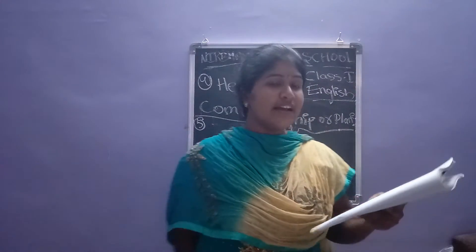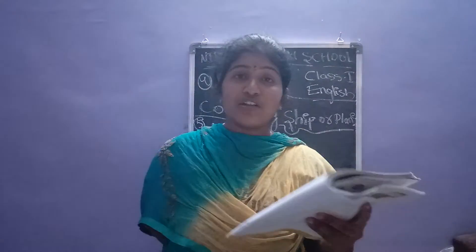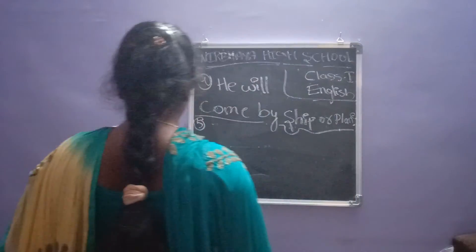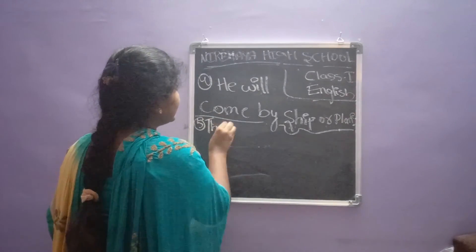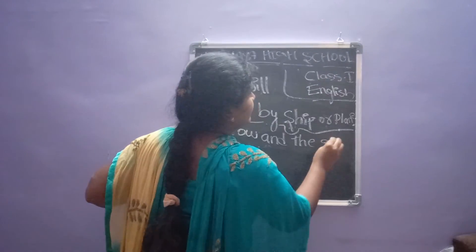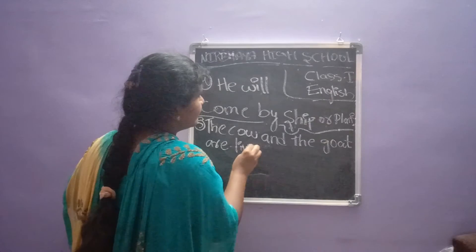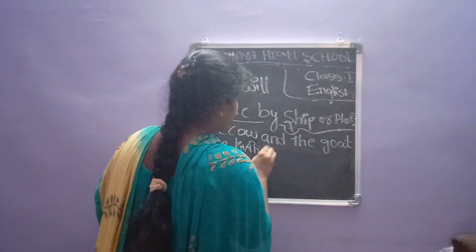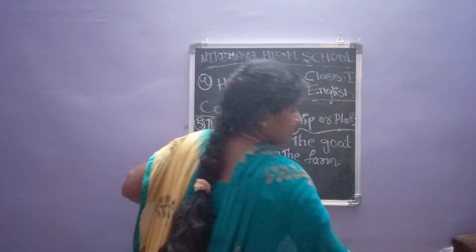Fifth one: the cow and goat. By using these words we have to make the sentence. The cow and the goat live on the farm. The cow and goat live on the farm.